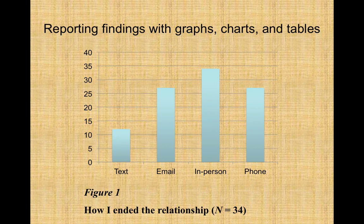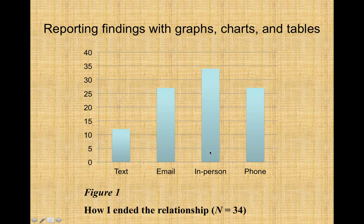If you are collecting quantitative data, which is numerical data, one of the easiest ways to display categorical numerical data is with a chart. For example, if you collected categorical data on how somebody ended a relationship and there were four options, you would run a frequency to determine how many people picked each option. Each of the columns are represented in the most common or most popular way, and this sample was in person.